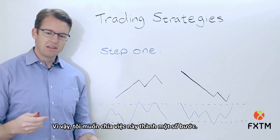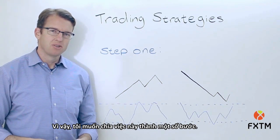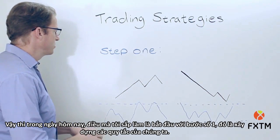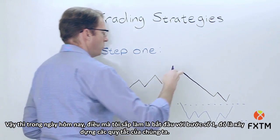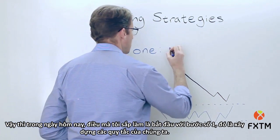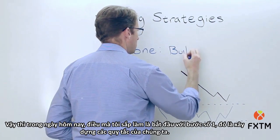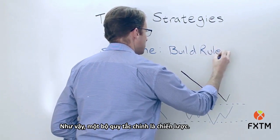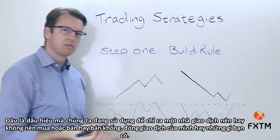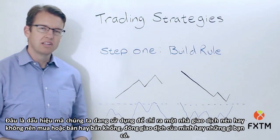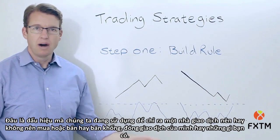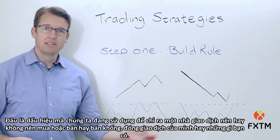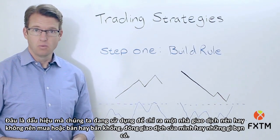I like to separate this up into a couple of steps. Today, we're going to start with step number one, which is to build our rules. A rule set is just what is the strategy — what is the signal that we're using to indicate whether or not a trader should be buying or selling, shorting, closing their trade, or what have you?